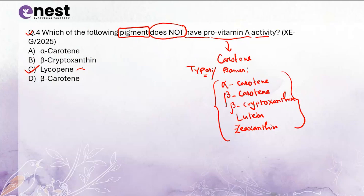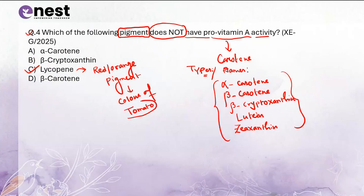Lycopene is the red to orange-colored pigment majorly responsible for the color of tomato. Remember, the red or orange color of tomato is majorly due to lycopene. So the correct option is option C.